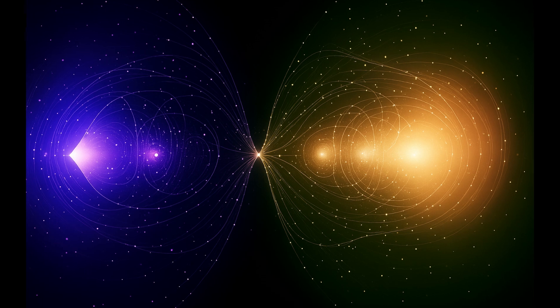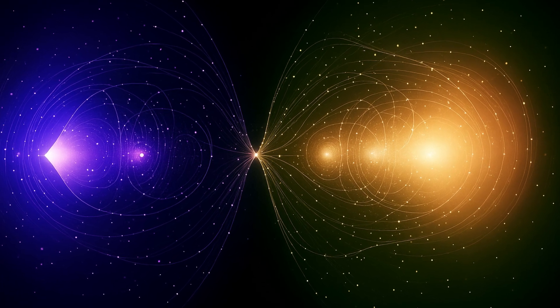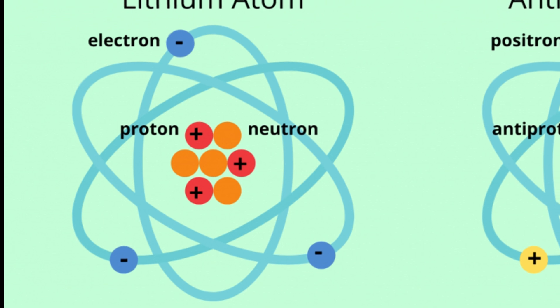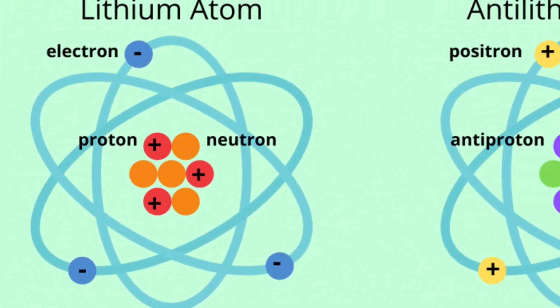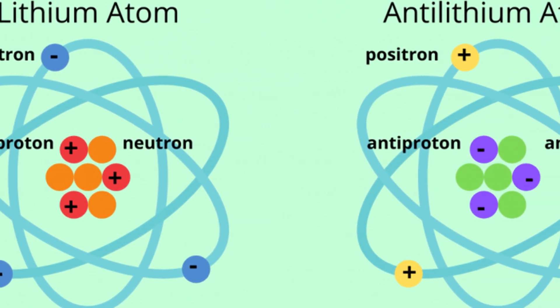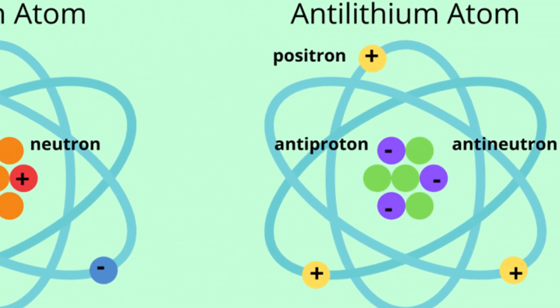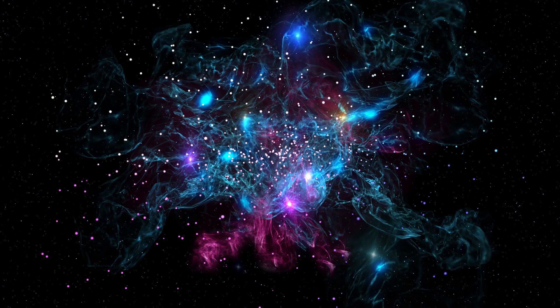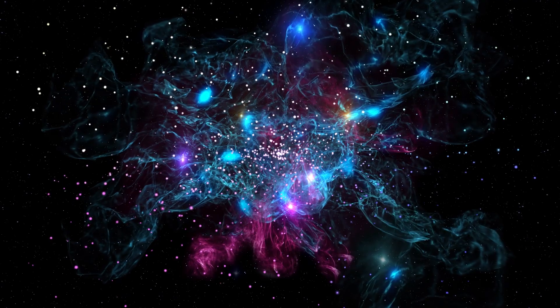Antimatter is basically the exact opposite of ordinary matter. For every particle we know, electron, proton, neutron, there is an antiparticle. Positron, antiproton, antineutron. Same mass, reversed electric charge.